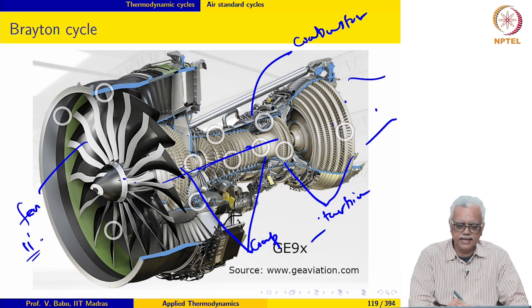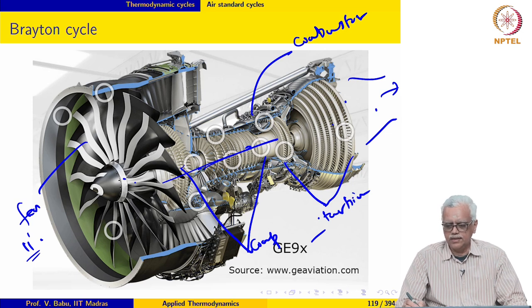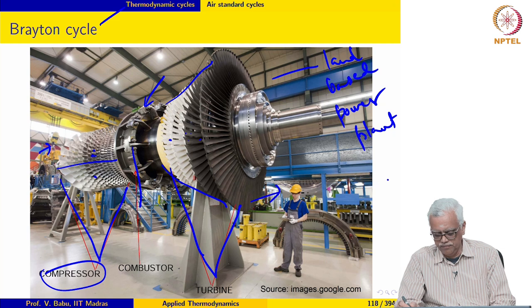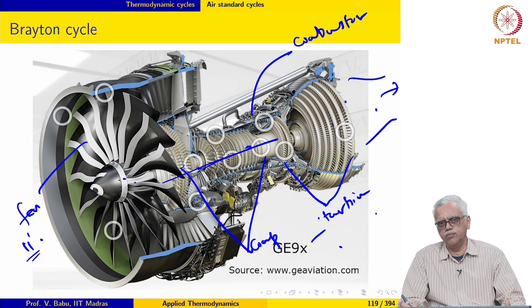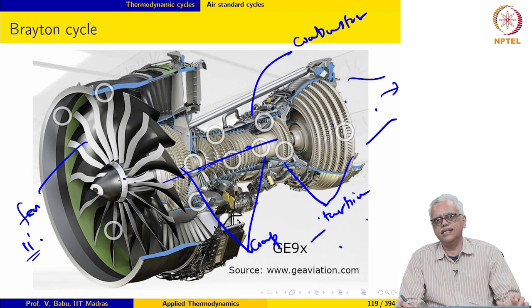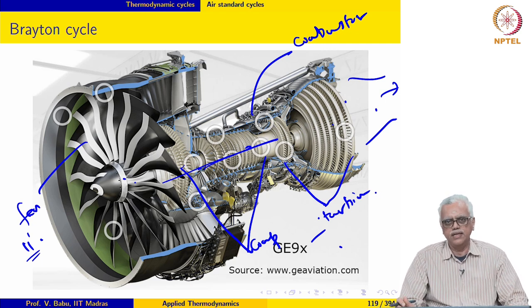The air taken in is mixed with the fuel, and the exhaust gases are sent out into the atmosphere — they are not taken back into the engine. So there is no cyclic process executed in this case either. Both the land-based gas turbine engine and the one used for aviation use the Brayton cycle, but the process is not a cyclic process. In the air standard case, we will look at an air standard Brayton cycle as an idealization of these applications.